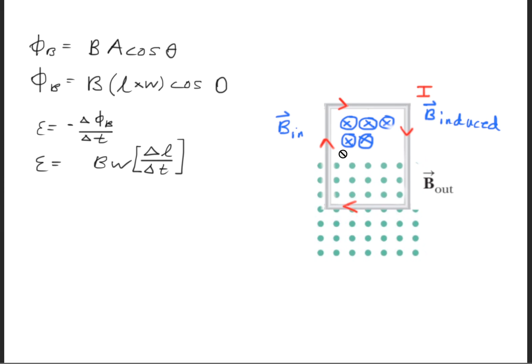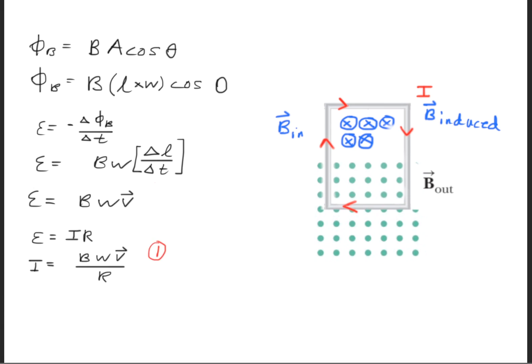The length is not growing, but it is changing as the loop goes down this path. When that happens, we can simply rewrite that change as the velocity. Now we'll use Ohm's law and substitute for the current. We'll make a note by putting a number 1 by this equation, because it will appear later on.